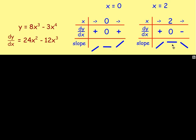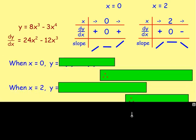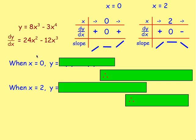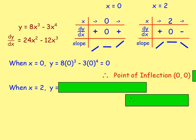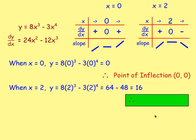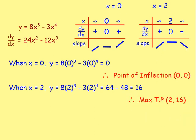After finding the nature, you need the y-values too. Make sure you substitute into y equals, not into the derivative. When x equals 0: y equals 8(0) minus 3(0) equals 0 — so there's a rising point of inflection at (0, 0). When x equals 2: substituting into y equals 8(8) minus 3(16) equals 64 minus 48 equals 16 — so there is a maximum turning point at (2, 16).